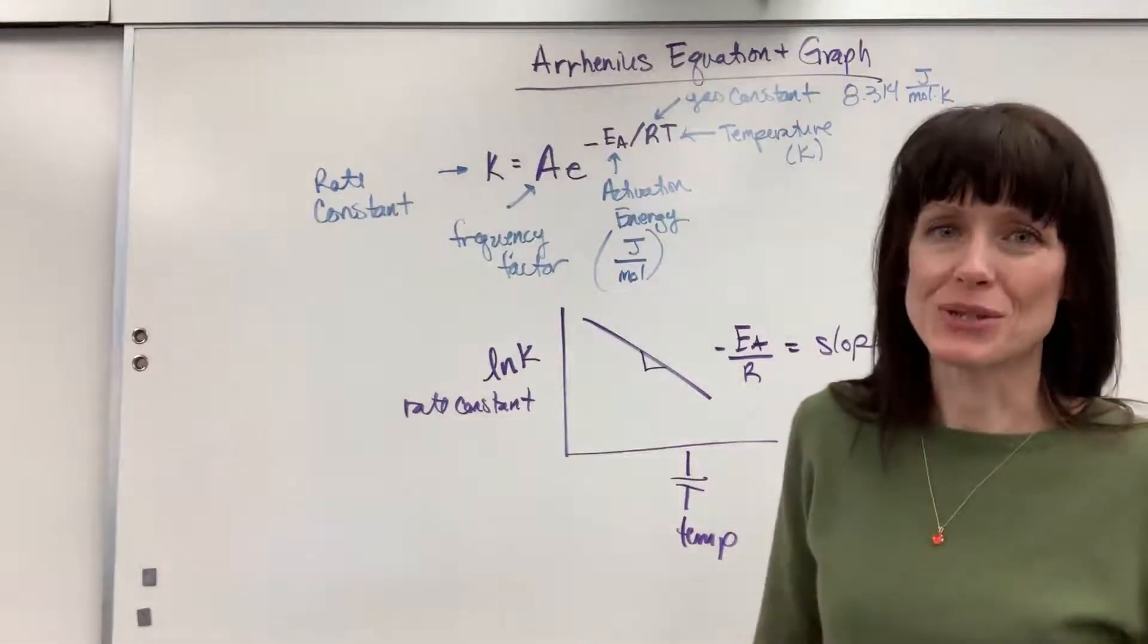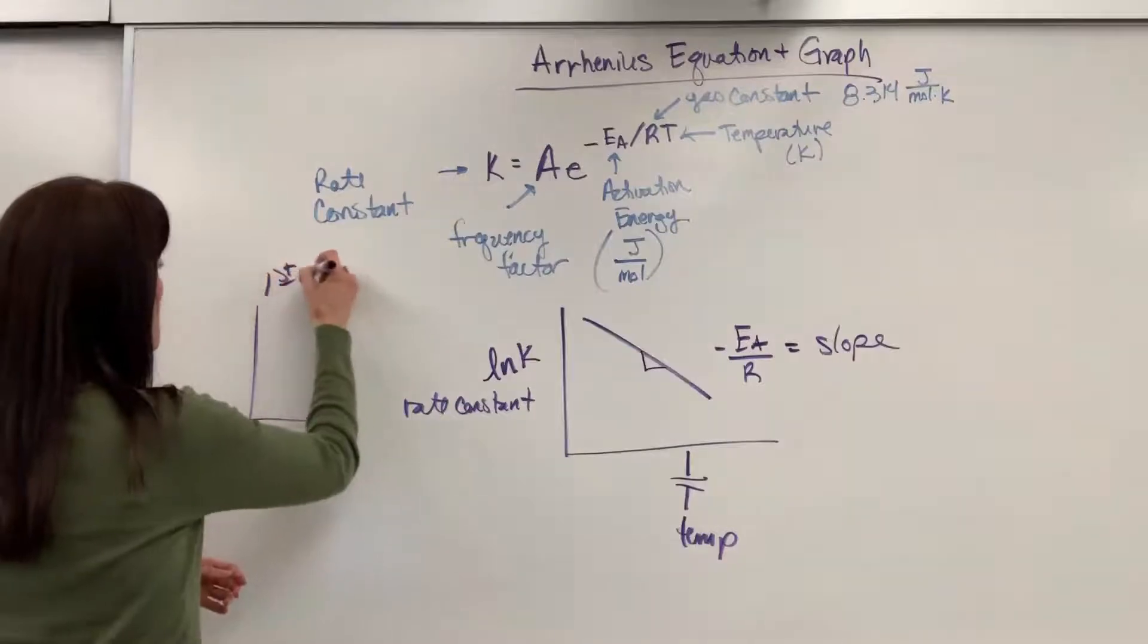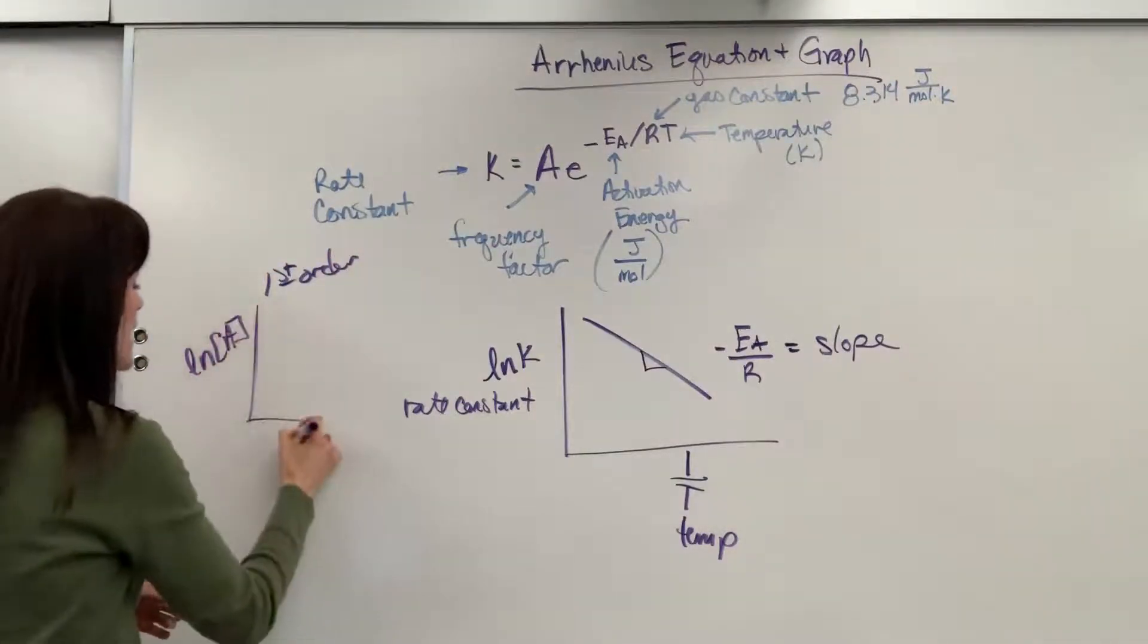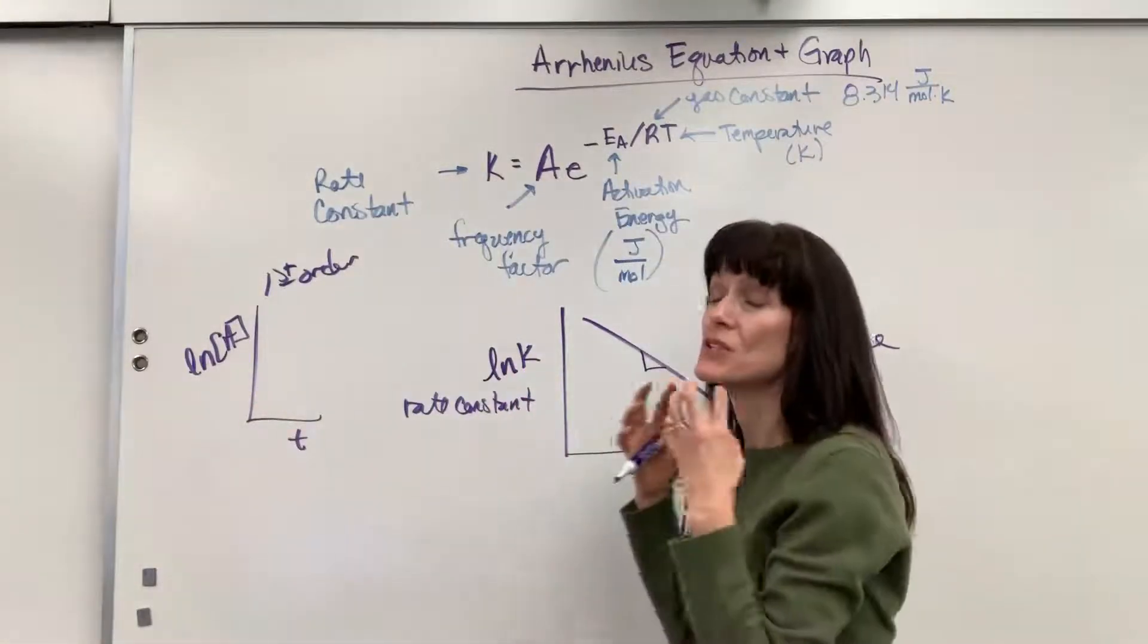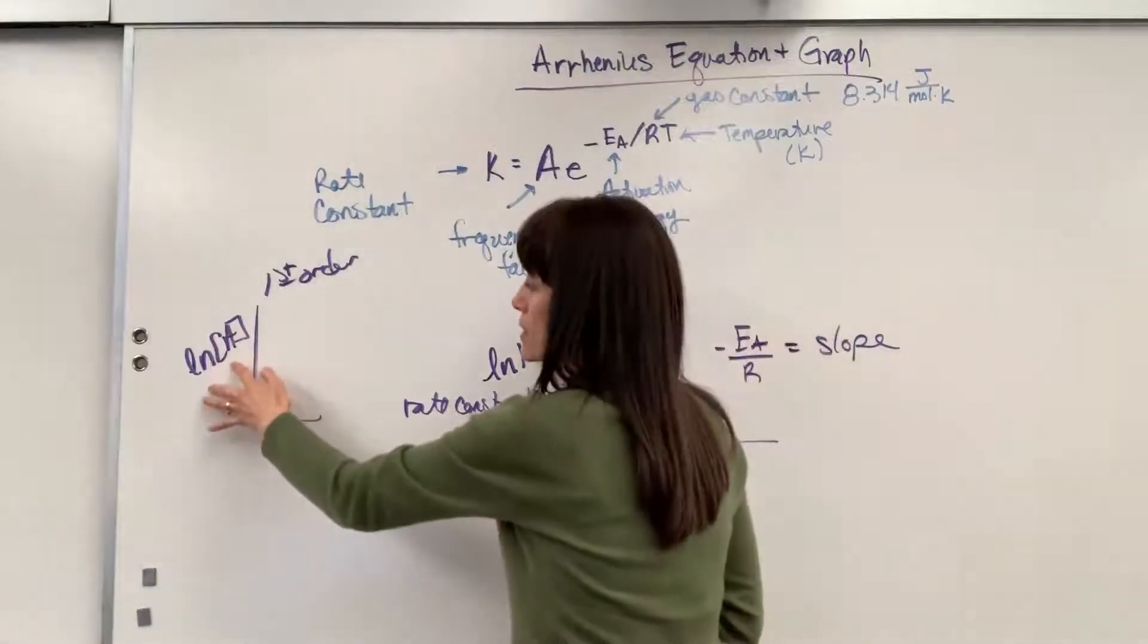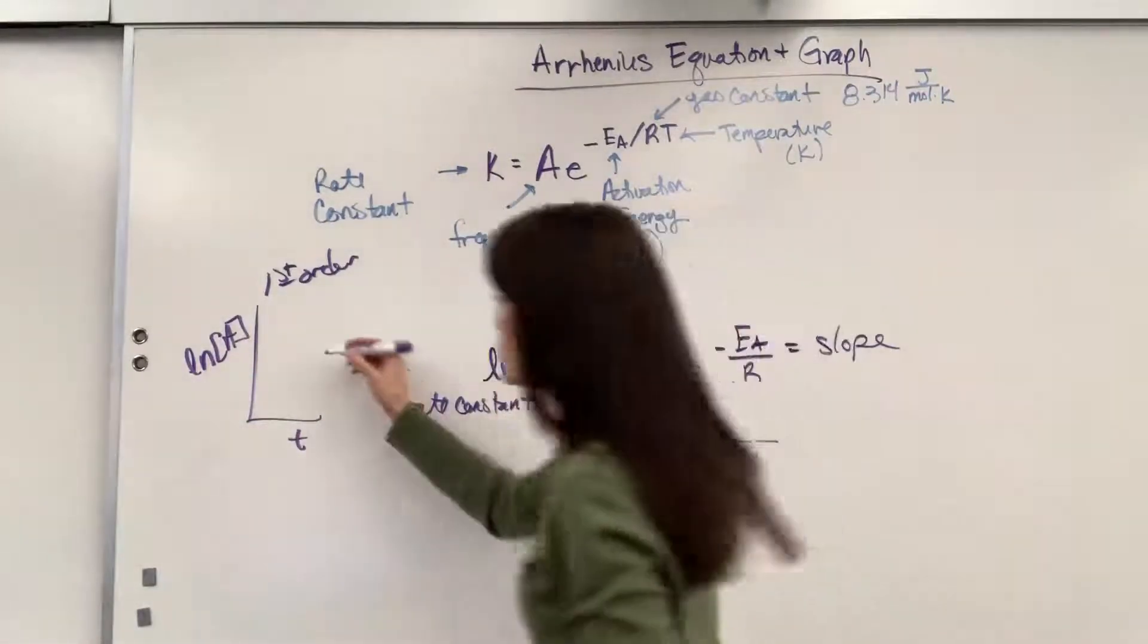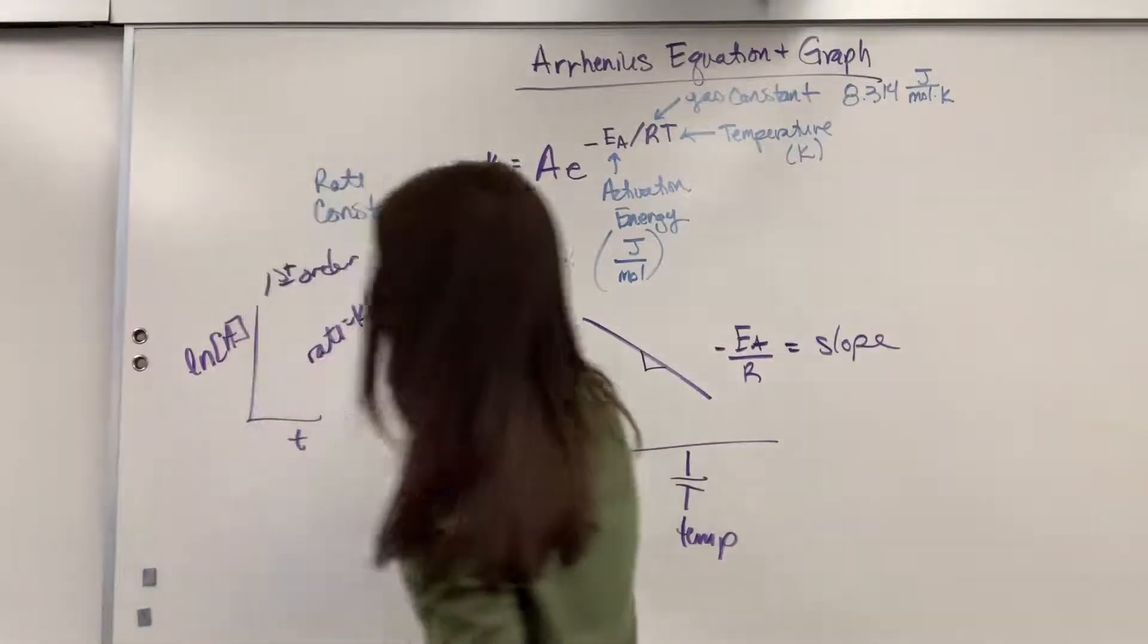And I'll tell you number one mistake that students make. They confuse it with the first order, which is natural log of concentration of A over time. Because they're both natural log, students mix those up. So, be so careful. Natural log of concentration over little t time, first order reaction. You've got rate equals K times concentration of A to the first order.